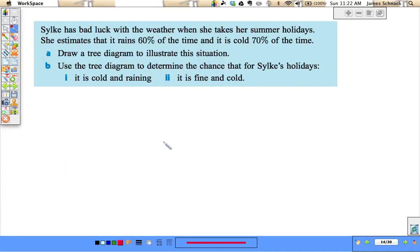Now we have Silky. She has bad luck with weather. So it rains 60% of the time she's on holiday, and it's cold 70% of the time. I think she should move. We want to draw a tree diagram.